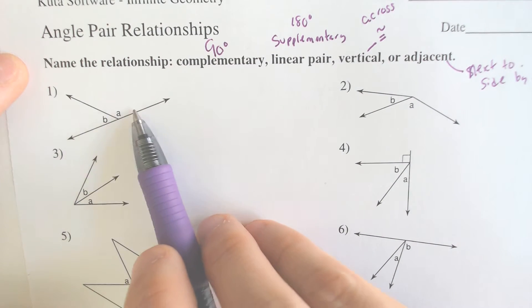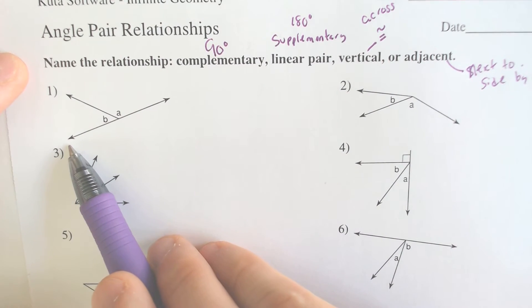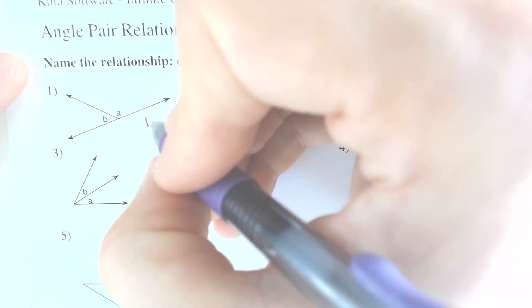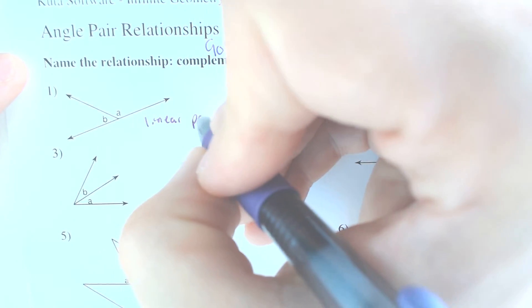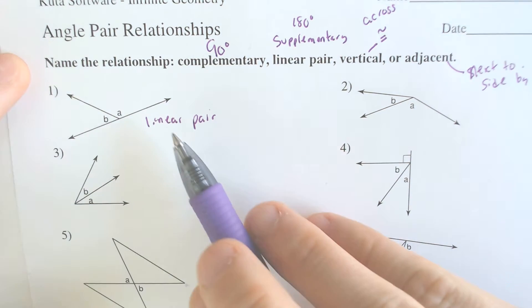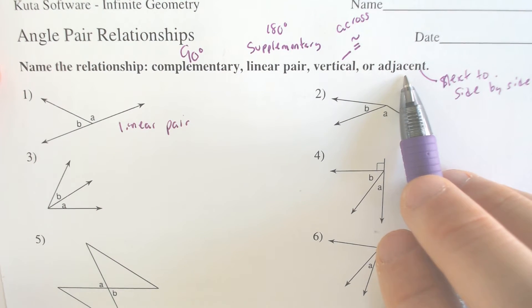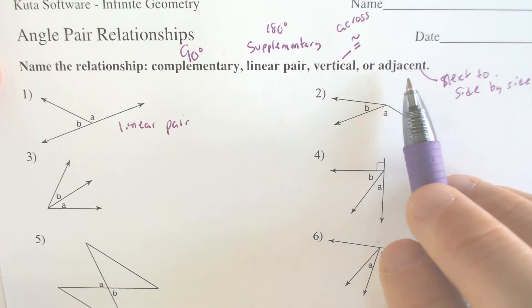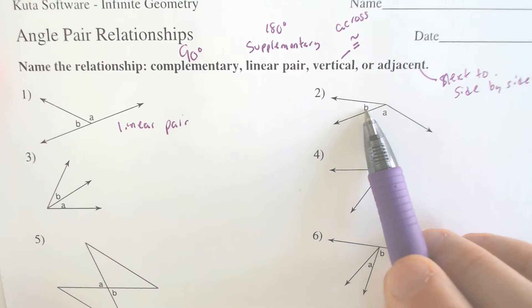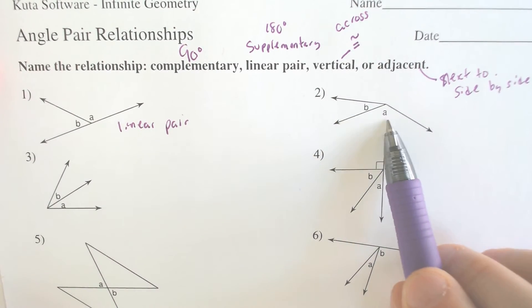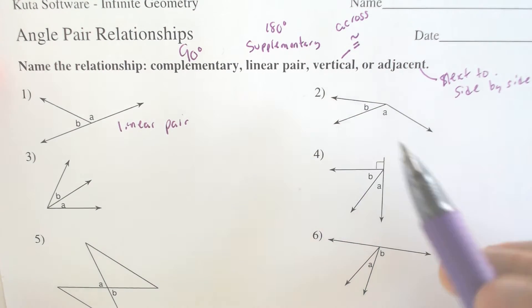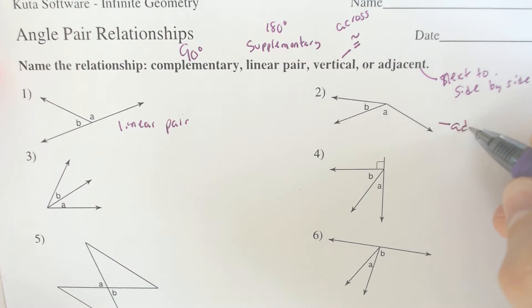So these first two, A and B, you may notice that when you put them together form a line, which means that this is a linear pair. And by the way, all linear pairs technically are adjacent, but I don't think we want to label it twice for the same thing. Whereas number two, A and B, they are not forming a line but they are next to each other, so this would be considered adjacent.